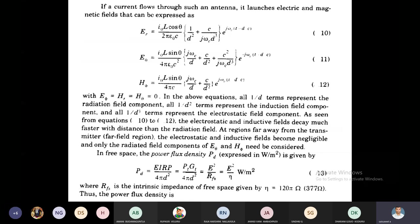That is how much radiation we are getting in a particular direction. 1 by D² term represents induction field component. Next, 1 by D³ term represents the electrostatic field component.